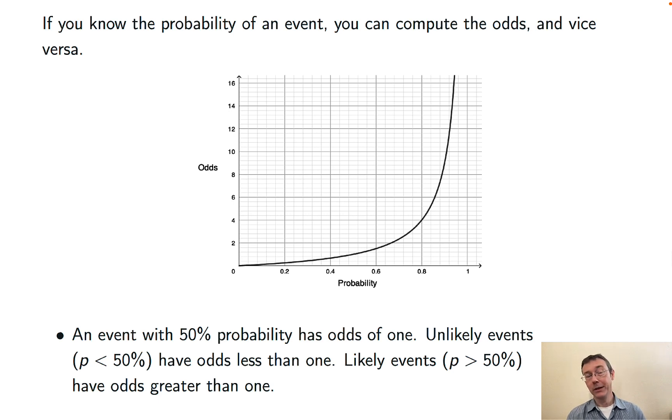Unlikely events, probability less than 50%, have odds less than one, while likely events, probability greater than 50%, have odds greater than one.